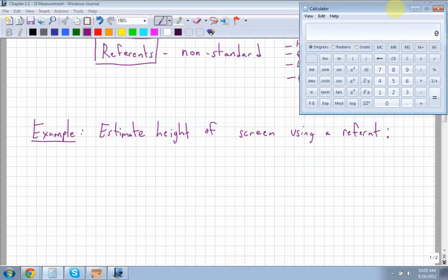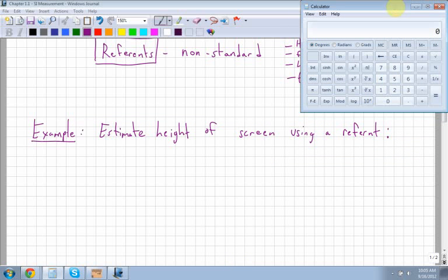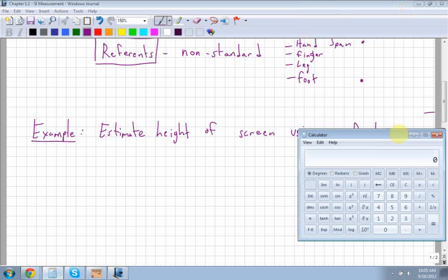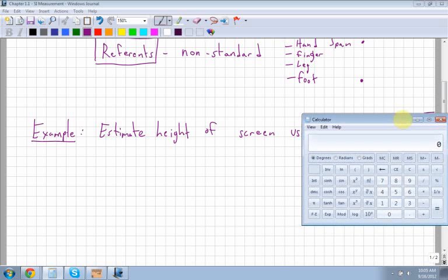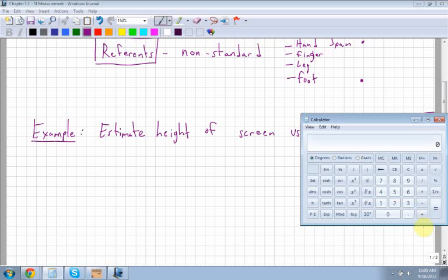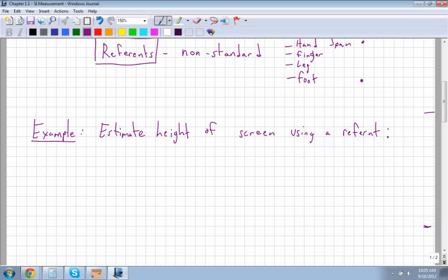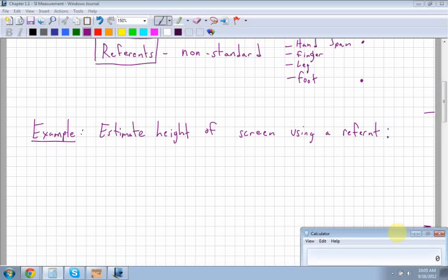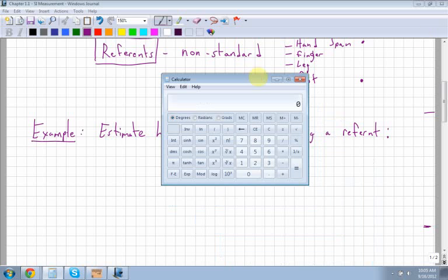Then I move my calculator down. See, it's not accurate, right? We're just estimating. And then I put another tick here, roughly. And I move my calculator down.